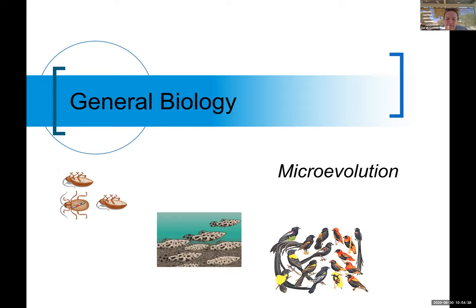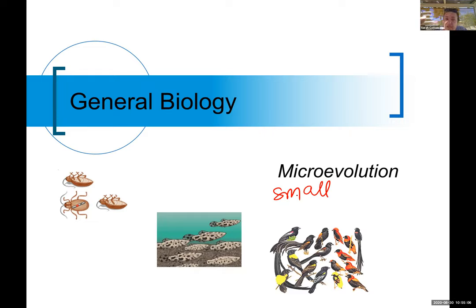The way I split up evolution is into micro evolution and macro evolution. Micro meaning small, and macro meaning large. This week we're covering a series of lectures on micro evolution, and next week we're going to be tackling a series of topics on macro evolution. You might be wondering what's the difference between small and big — and that's one of the things we're going to explore.